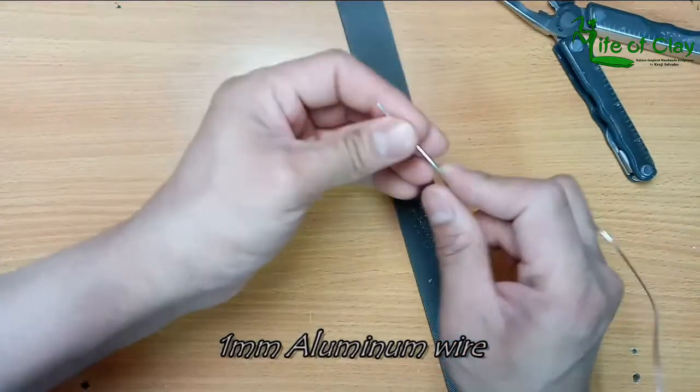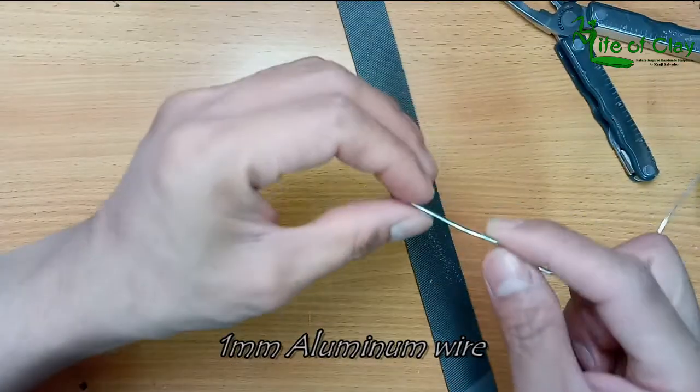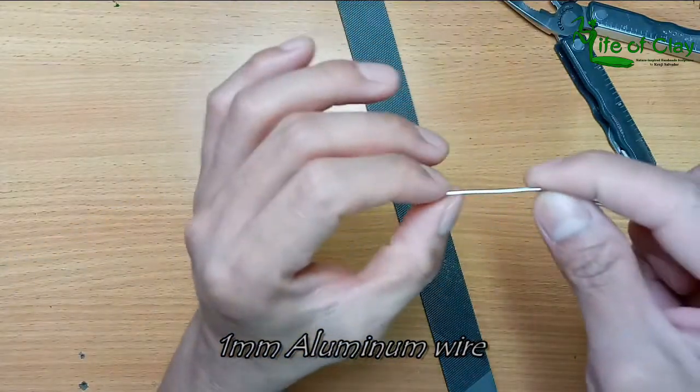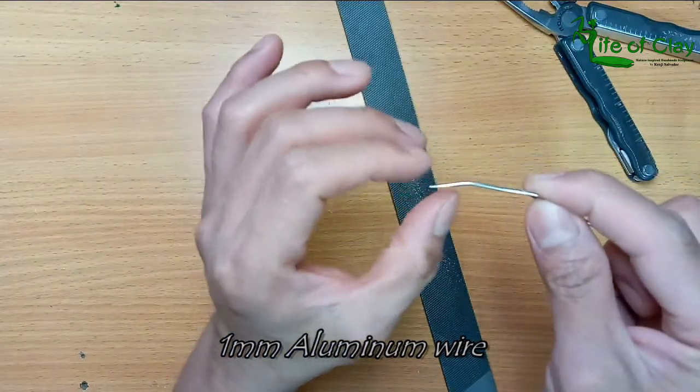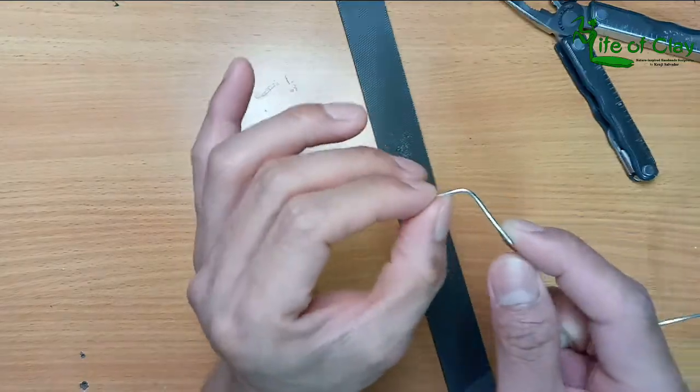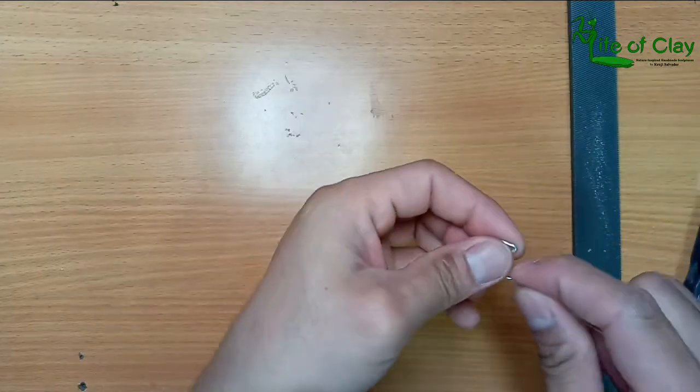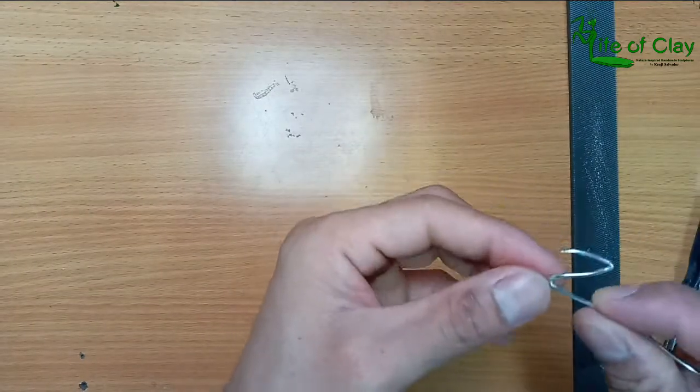I start preparing the wires for the armature. I file the tip to make it pointy and this will be for the mantis front legs. Bending them according to the shape of its front legs.